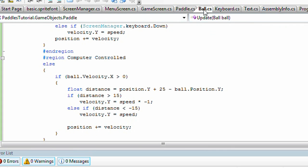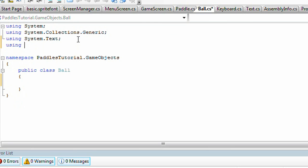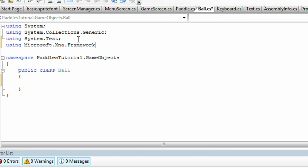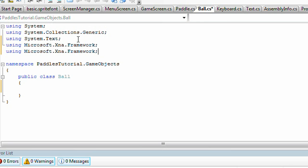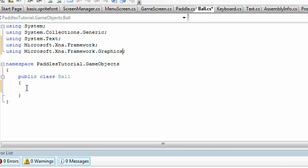Save the paddle class and go to the ball class. Add to using, above, using Microsoft.Xna.Framework. As one, we are going to highlight that and copy it. Paste it at the bottom. And then another one will be Framework.Graphics.